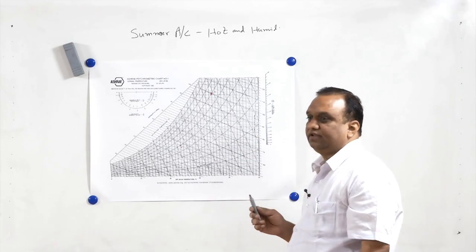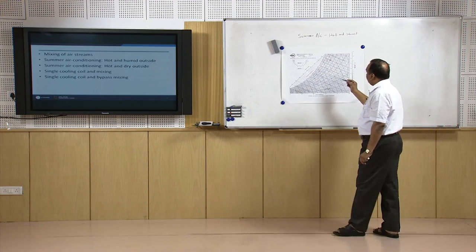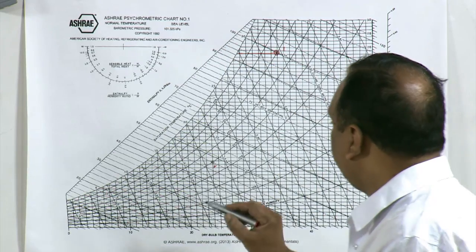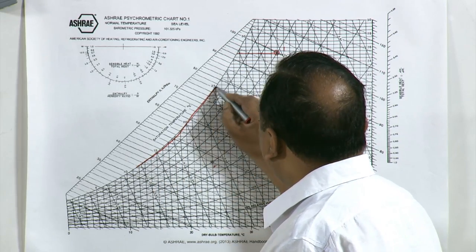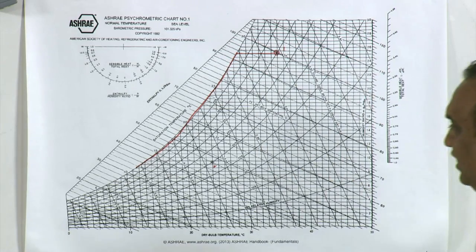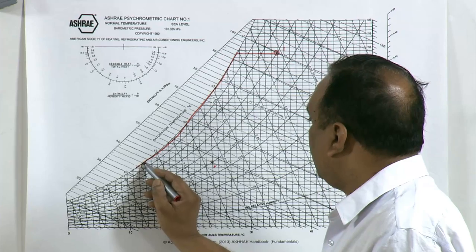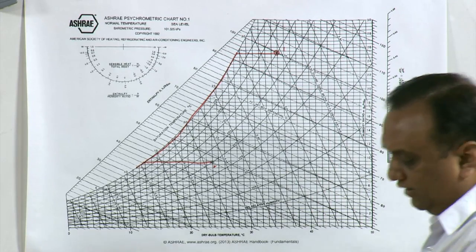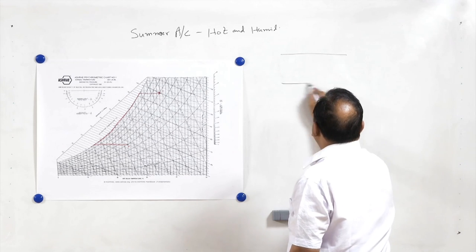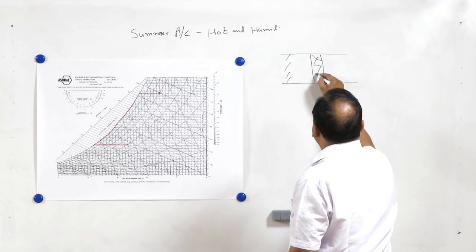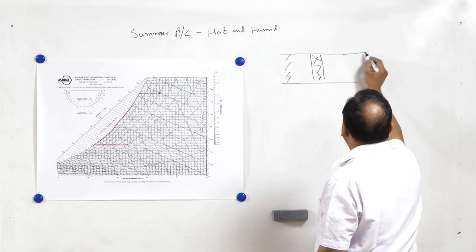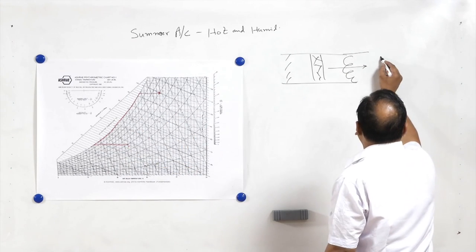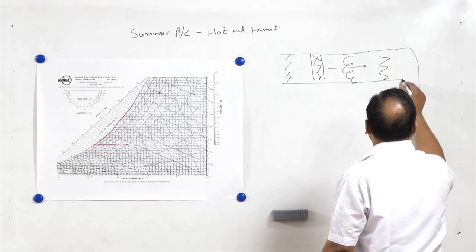For this type of situation, cooling with dehumidification is done. Through cooling and dehumidification we follow this line, and then at an appropriate point heating can be done to reach the desired inside condition. For this arrangement we should have a duct with dampers and filter, then a cooling coil over which air is blown, and after the cooling coil there is a heater. After the heater, the air is sent to the room.